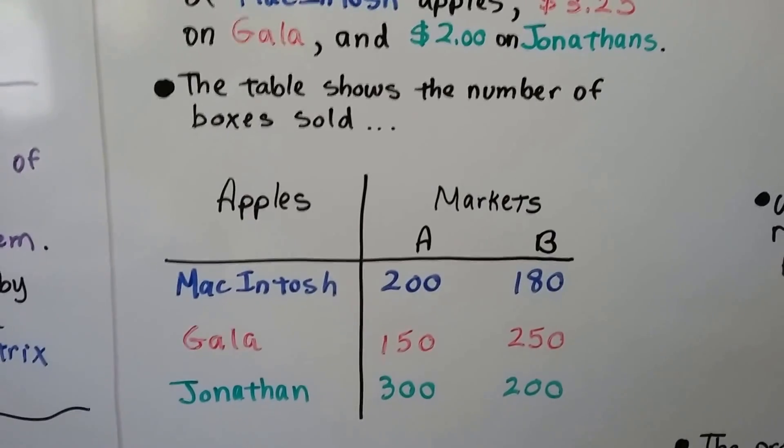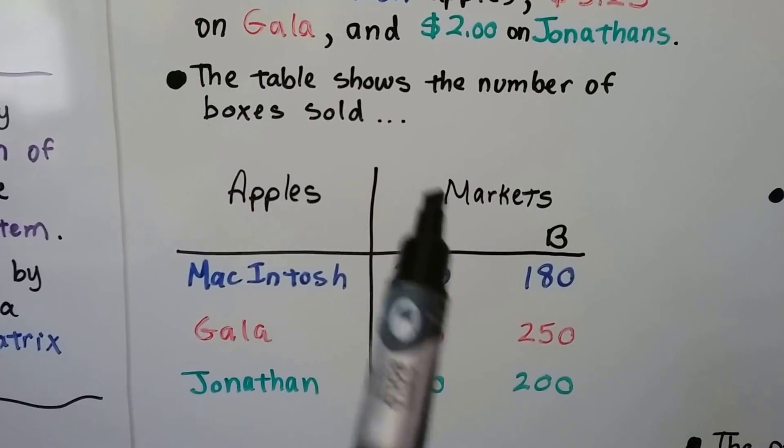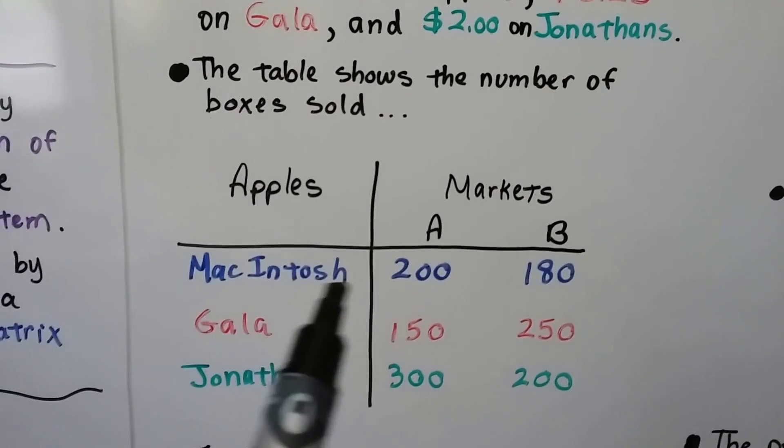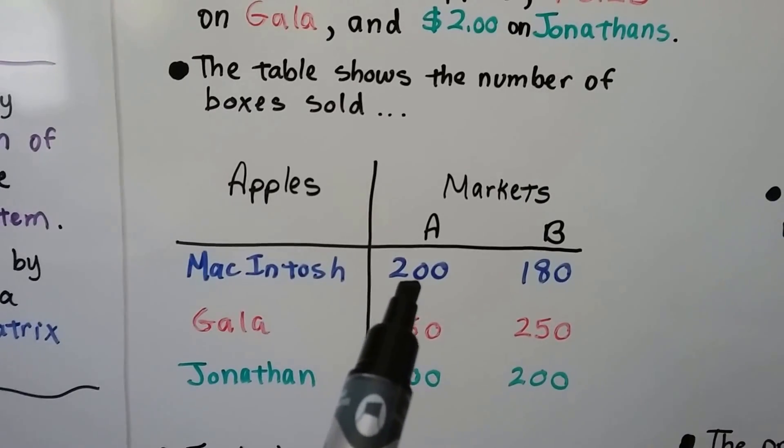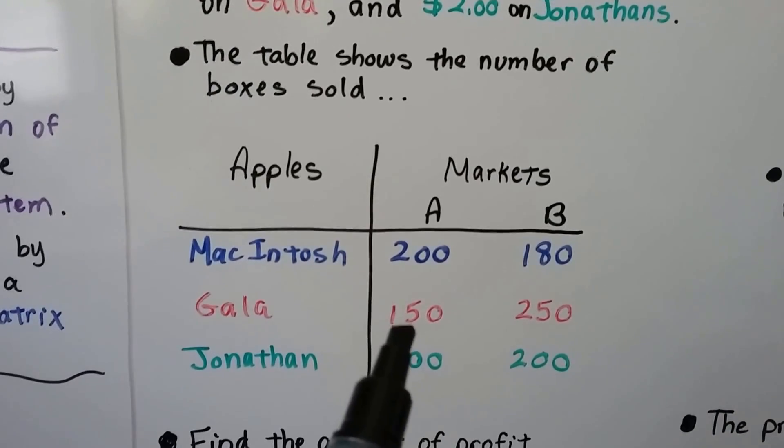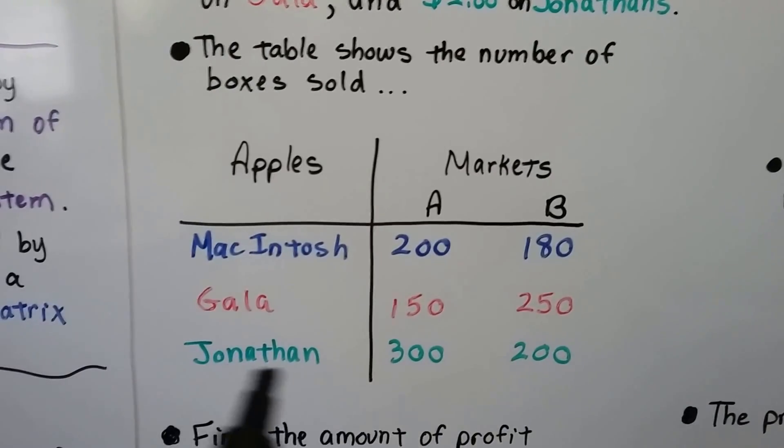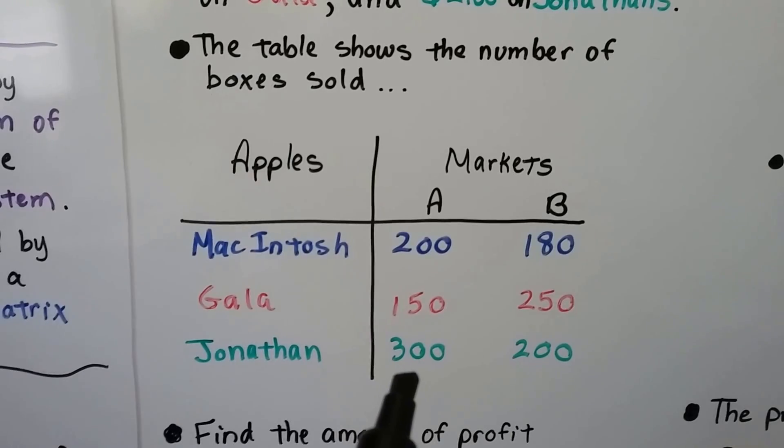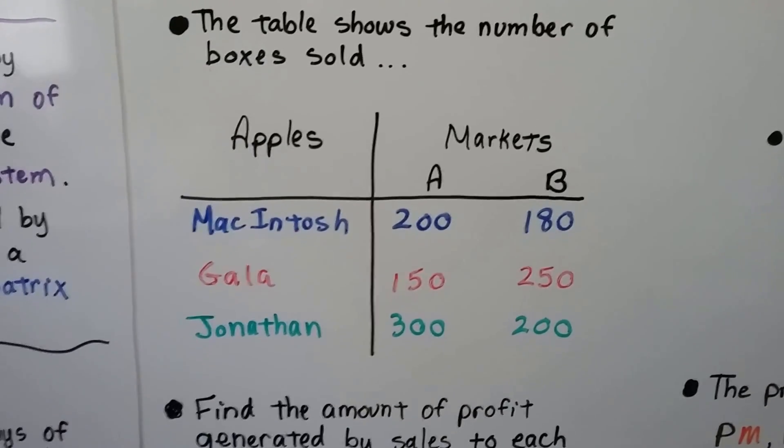You can see there's two markets, A and B. Macintosh sells 200 at market A and 180 at market B. Gala sells 150 at A and 250 at B. Jonathans sell 300 at market A and 200 at market B. I'm going to find the amount of profit generated by sales to each market.